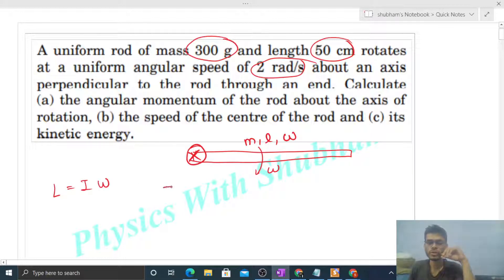That is simply I into omega. What is I about this axis? That is mL²/3, perpendicular to the rod and passing through one of its ends. You can calculate the value of I: m ka value 0.3, L ka value 0.5 squared divided by 3. From here moment of inertia will come. Moment of inertia ko hum omega se multiply kar denge, omega is 2 radians per second.